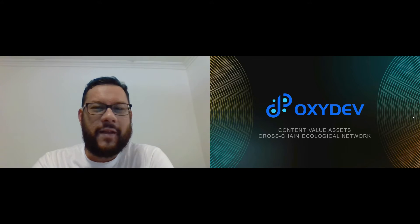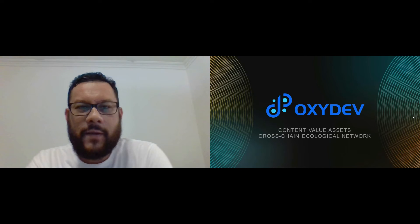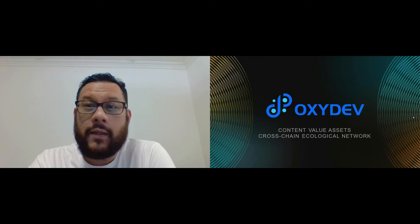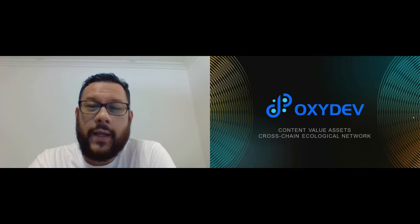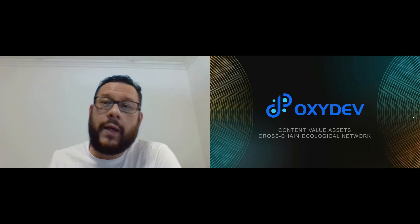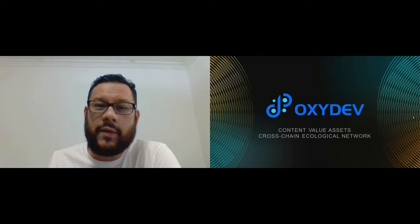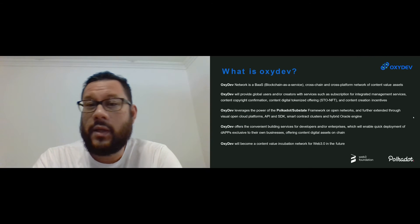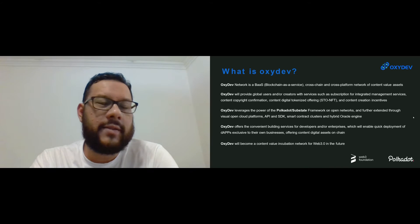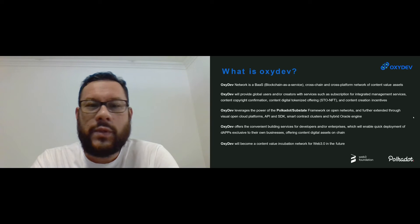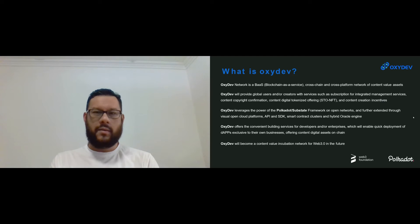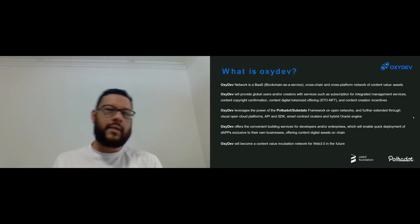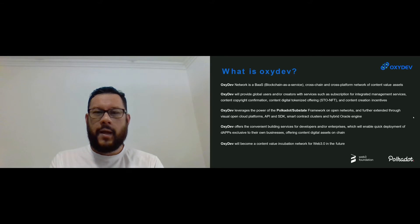Hello everyone, welcome back to the Oxidef channel. Here we are at part two of the technical overview. Just before we start, I'll go back a little bit and explain what Oxidef is about again to refresh our memories. Oxidef is a content value asset cross-chain ecological network — a blockchain-as-a-service cross-chain and cross-platform network for content value assets, enabling users and creators to get services such as subscription, integrated asset management, content copyright confirmation, digital tokenized offering, and content creation incentives.